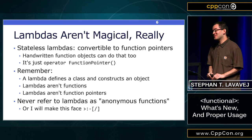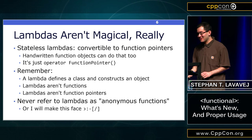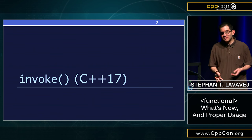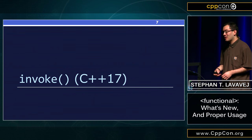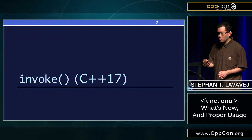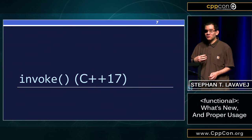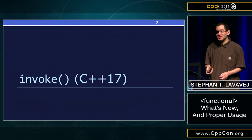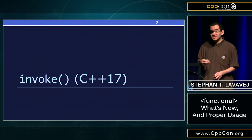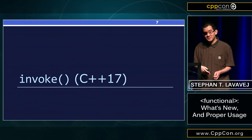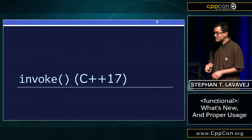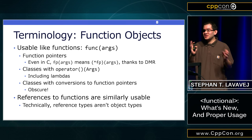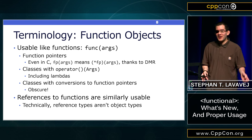That's the core language feature. For the rest of the talk, I'm going to talk about the standard library. Instead of chronological order — 11, then 14, then 17 — I want to present it in logical order. The story begins with invoke. Invoke is a function in C++17, but you still need to understand it even if you're only using C++11 and C++14. I need to introduce a couple of bits of terminology.